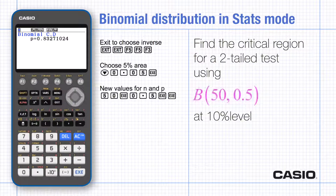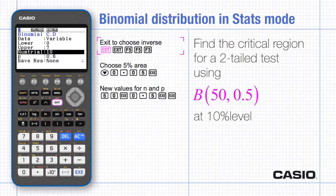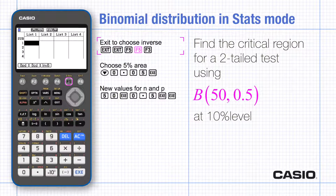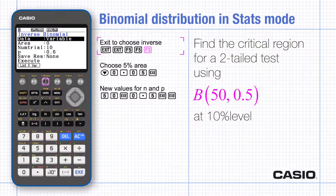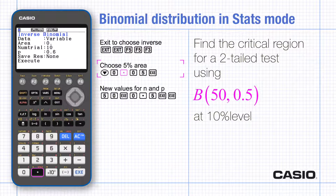If you're doing a hypothesis test based on the binomial distribution, you'll probably want to find the critical regions. You may want to use the inverse probability function. Exit the cumulative menu back as far as choosing distribution, binomial and inverse.